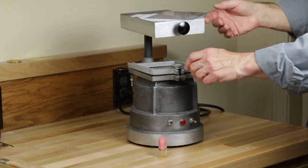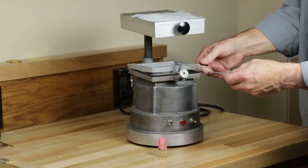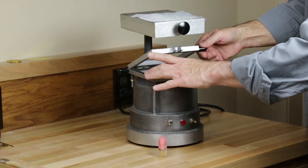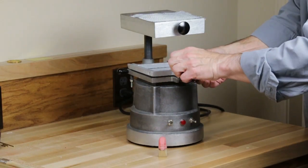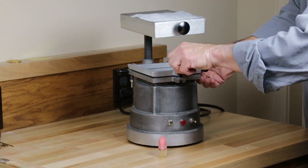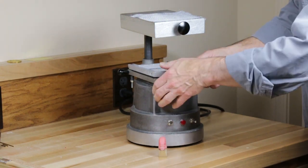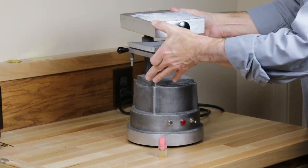The vacuum forming process begins by mounting a sheet of material stock in the frame. The frame is raised close to the heat source.